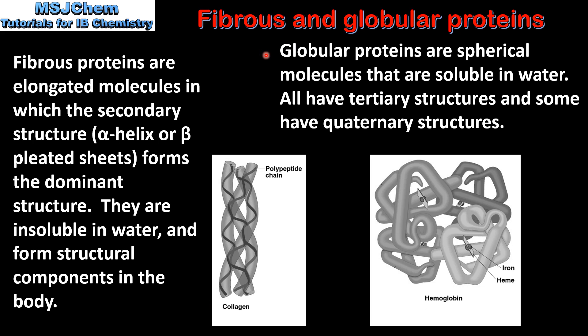Next, globular proteins. Globular proteins are spherical molecules that are soluble in water. All have tertiary structures and some have quaternary structures. Here we have an example of a globular protein, which is haemoglobin.